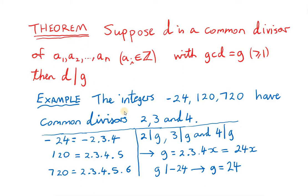Before proving this theorem, we look at an example. We take the integers minus 24, 120, and 720. Those integers have common divisors 2, 3, and 4. So the theorem says that each of those common divisors will divide the greatest common divisor g of the integers. So 2 divides g, 3 must divide g, and 4 must divide g.